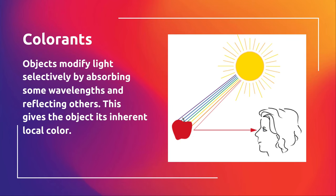Like the red of an apple — the wavelengths that are not red are absorbed by the object, and the red wavelengths are reflected. That's what we see in the eye, in my unscientific explanation.